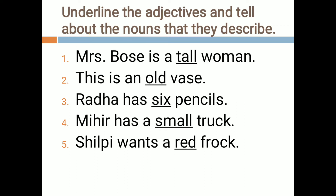Secondly, 'this is an old vase.' Old is representing age — basically the age of the vase. So 'old' is representing the age of which thing? Vase. So vase is the noun here and 'old' is the adjective.